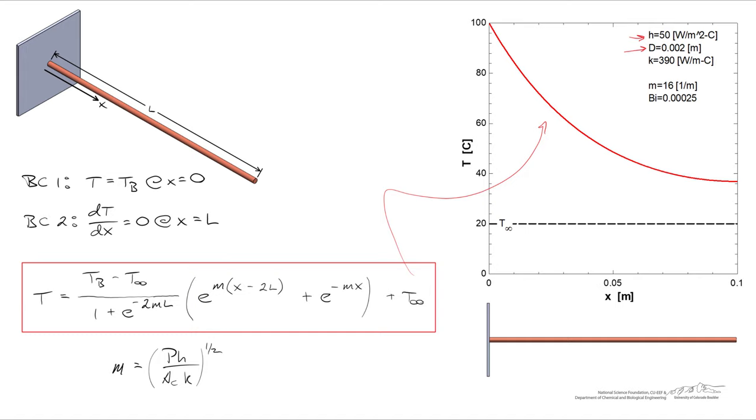I chose the thermal conductivity of copper, and then the combination of these parameters results in a fin parameter of 16 per meter. It also represents a BO number that is very small. If you're not familiar with a BO number yet, don't worry about it.